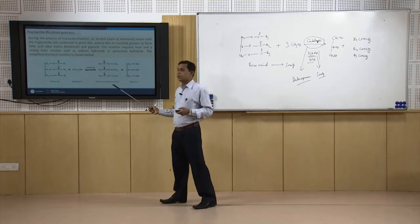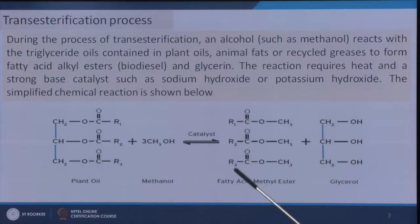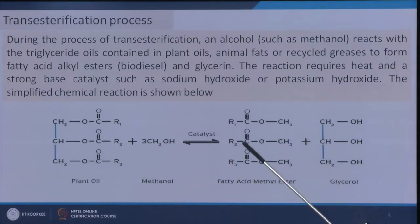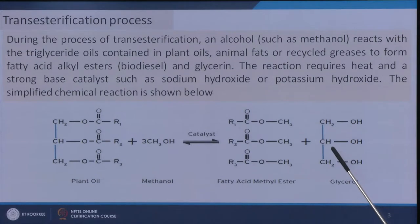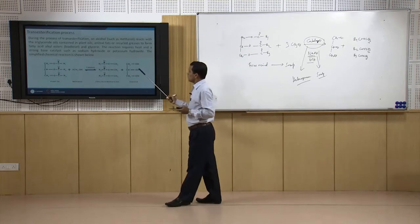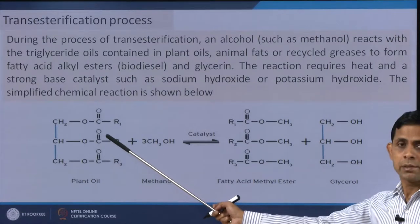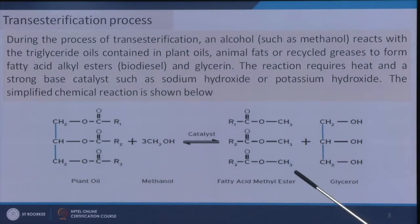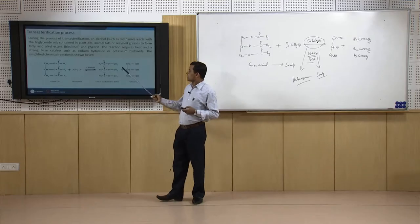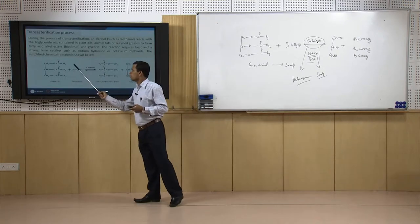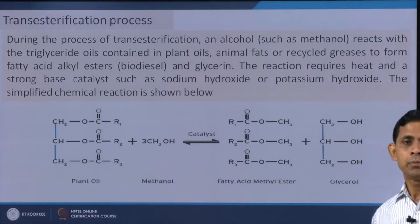By this process we get fatty acid methyl esters when methanol is used. These compounds are the components of biodiesel. Glycerol is a byproduct — not desirable for fuel applications, but it has immense utility; it can be purified and applied in many other applications. The triglyceride present in waste materials can be converted to value-added products by the transesterification process, some of which have energy values. Now we will look at where these triglycerides come from — what type of waste they can be obtained from.